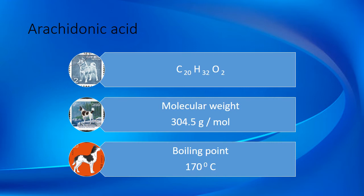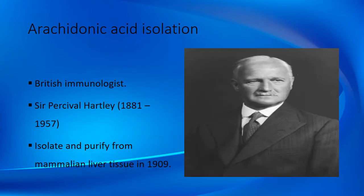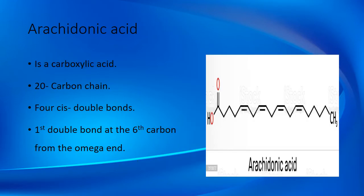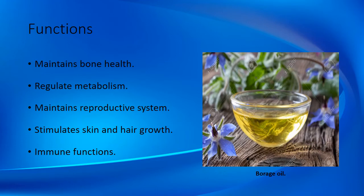Arachidonic acid is not an essential omega-6 fatty acid for your dog. Its chemical formula is C20H32O2, its molecular weight is 304.5 grams per mole, and its boiling point is around 170 degrees Celsius. Arachidonic acid was isolated by British immunologist Sir Percival Hartley, who lived between 1881 and 1957. He isolated and purified it from mammalian liver tissue in 1909. Structurally, it is a carboxylic acid with a 20-carbon chain and four double bonds, with the first double bond at the 6-carbon position from the omega end.